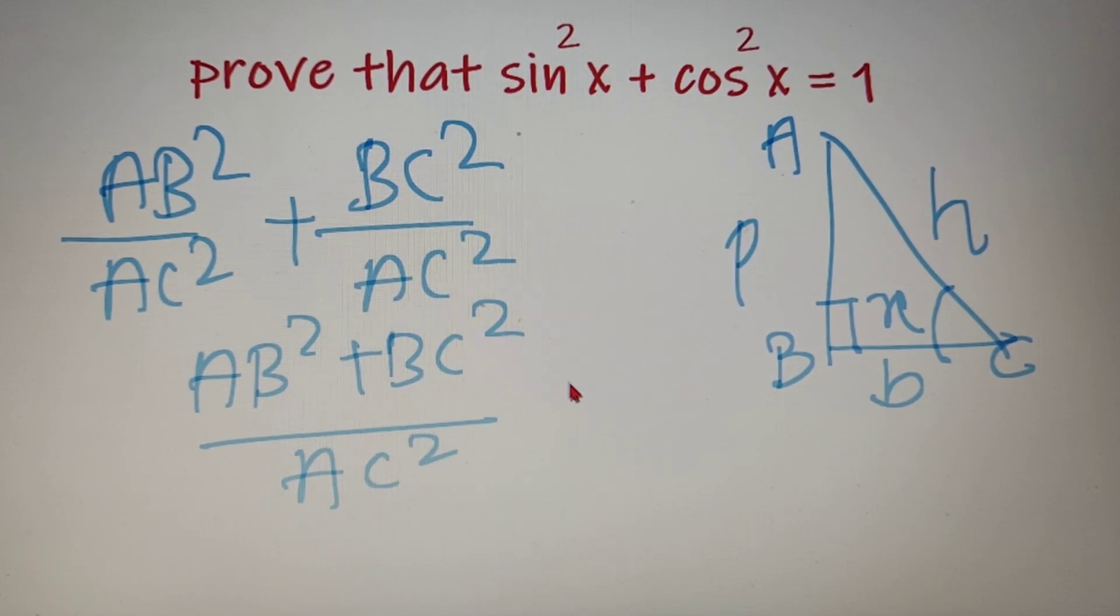I know a very famous theorem related to a right-angled triangle which is the Pythagoras theorem, and which states that the sum of squares of perpendicular and base is equal to that of square of the hypotenuse. So according to the Pythagoras theorem, instead of AB square plus BC square I can write it down as AC square.